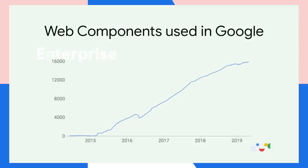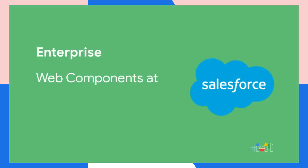Web components are also hitting a remarkable stride inside enterprises as a safe, future-proof technology to standardize on. Google has built over 15,000 web components internally, and the number continues to grow. For a more detailed look at why enterprises are choosing web components, we've invited our friends from Salesforce to share some insight. I'll hand it over to Karity Patino, an architect on the UI platform at Salesforce.